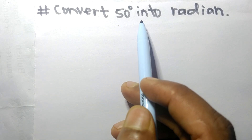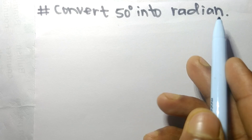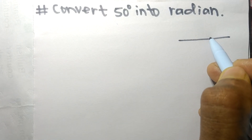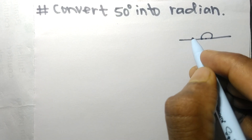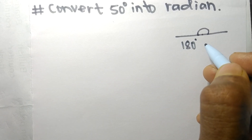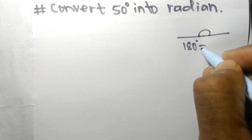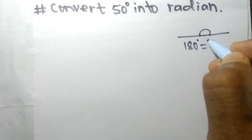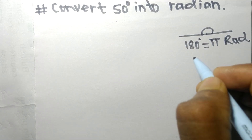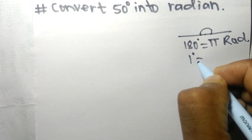Today in this video we convert 50 degrees into a radian. In a straight line or in a semicircle, the sum of angles is 180 degrees, and it is equal to pi radians. So one degree is equal to pi by 180 radians.